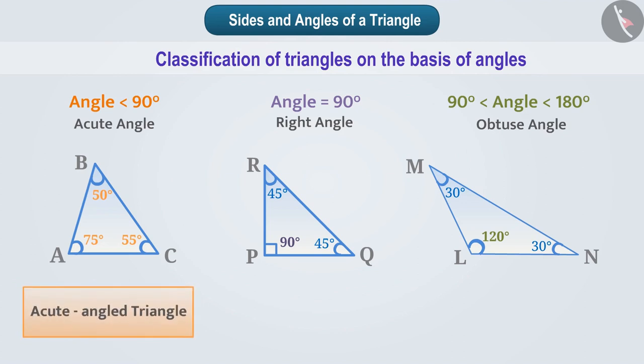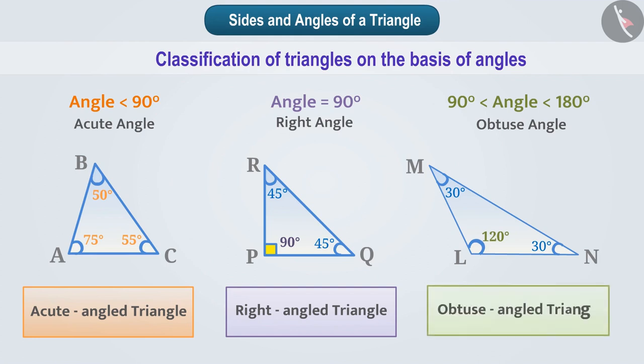A triangle that has a right angle is called a right angled triangle. Keep in mind, the right angle is represented this way. Similarly, a triangle with an angle greater than 90 degrees but less than 180 degrees is called an obtuse angled triangle.